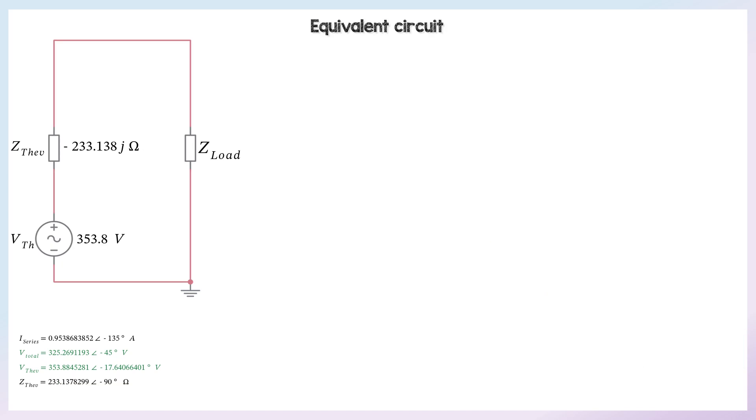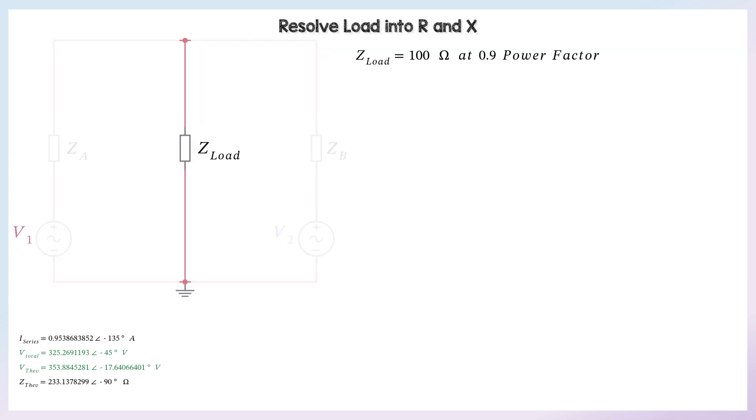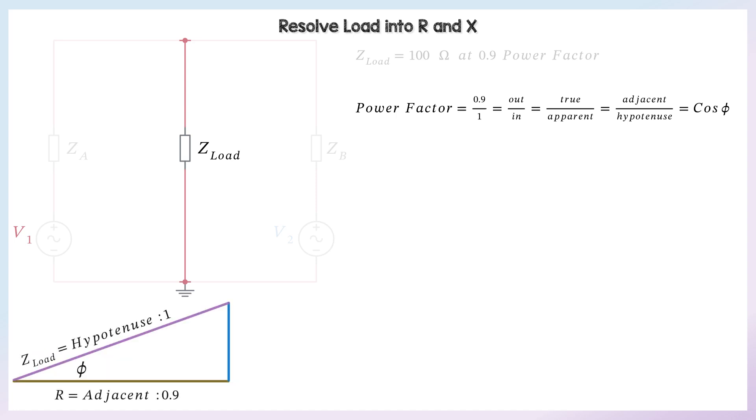So now we've got everything that we need. The current through the load is the Thevenin voltage divided by the total impedance in the circuit. But some questions give you a bit of a curveball. So our load is 100 ohms at 0.9 power factor. And because there's a power factor, we know there's a reactive component. And it's positive 0.9, so we know it's inductive. Power factor is true power compared to apparent, which is adjacent compared to hypotenuse, which is what cosine is. So 0.9 is the cosine of our phase angle for this impedance.